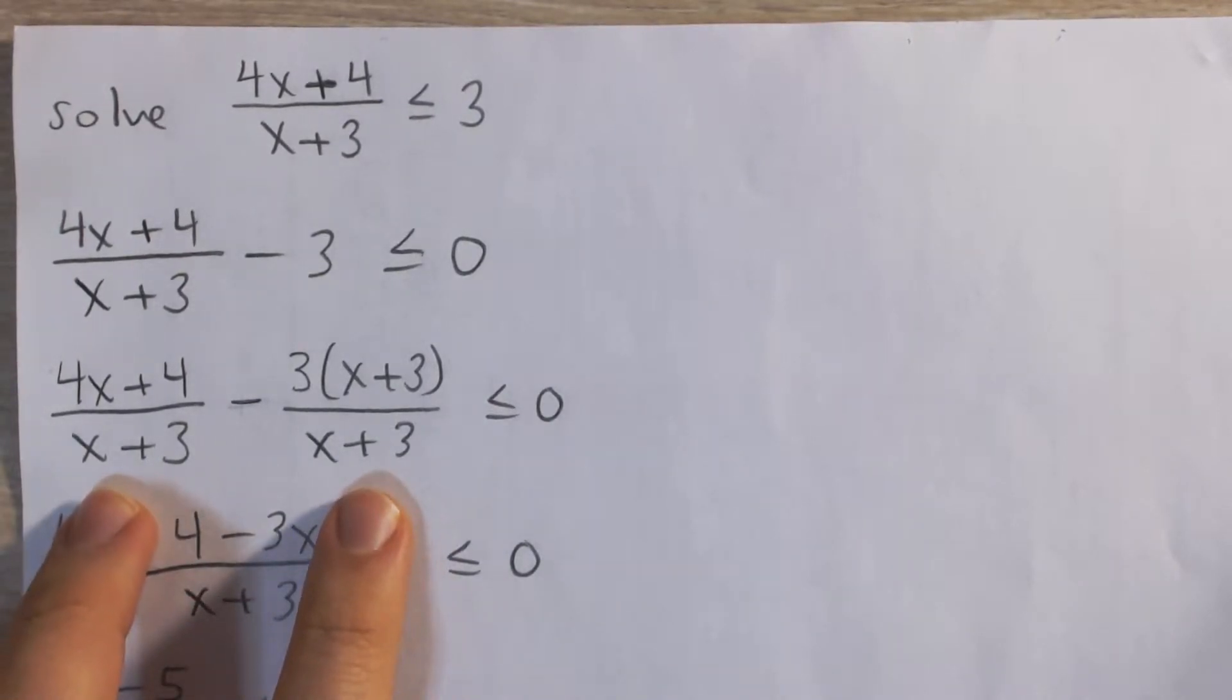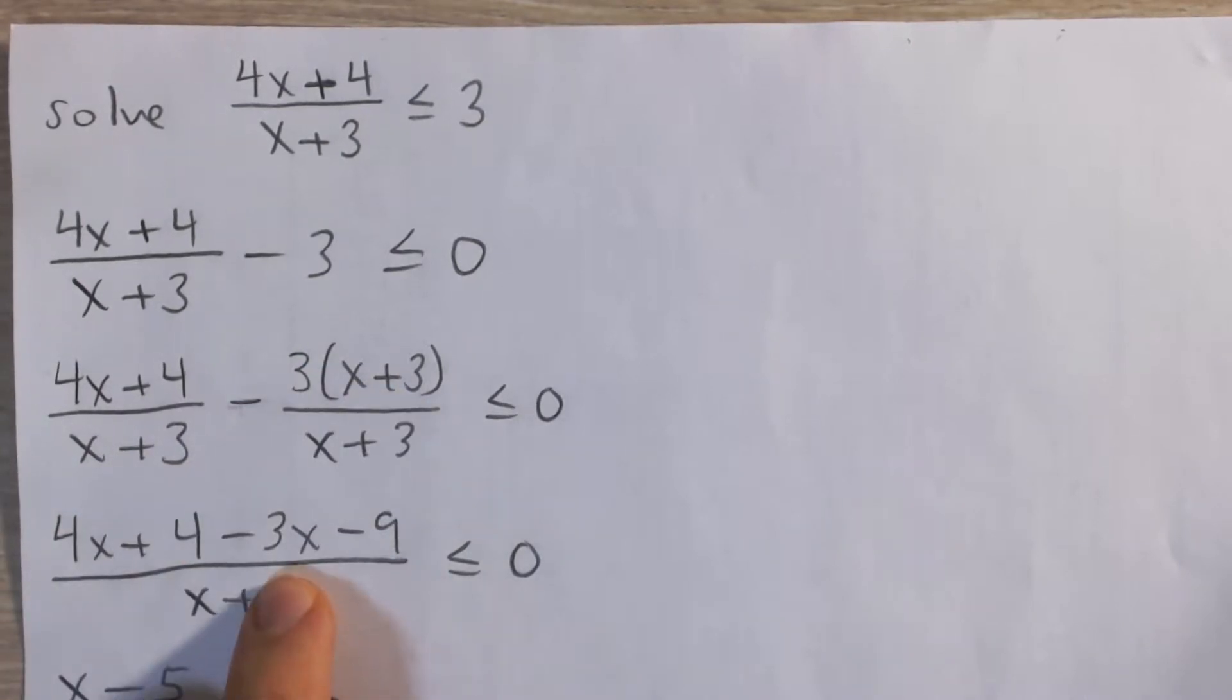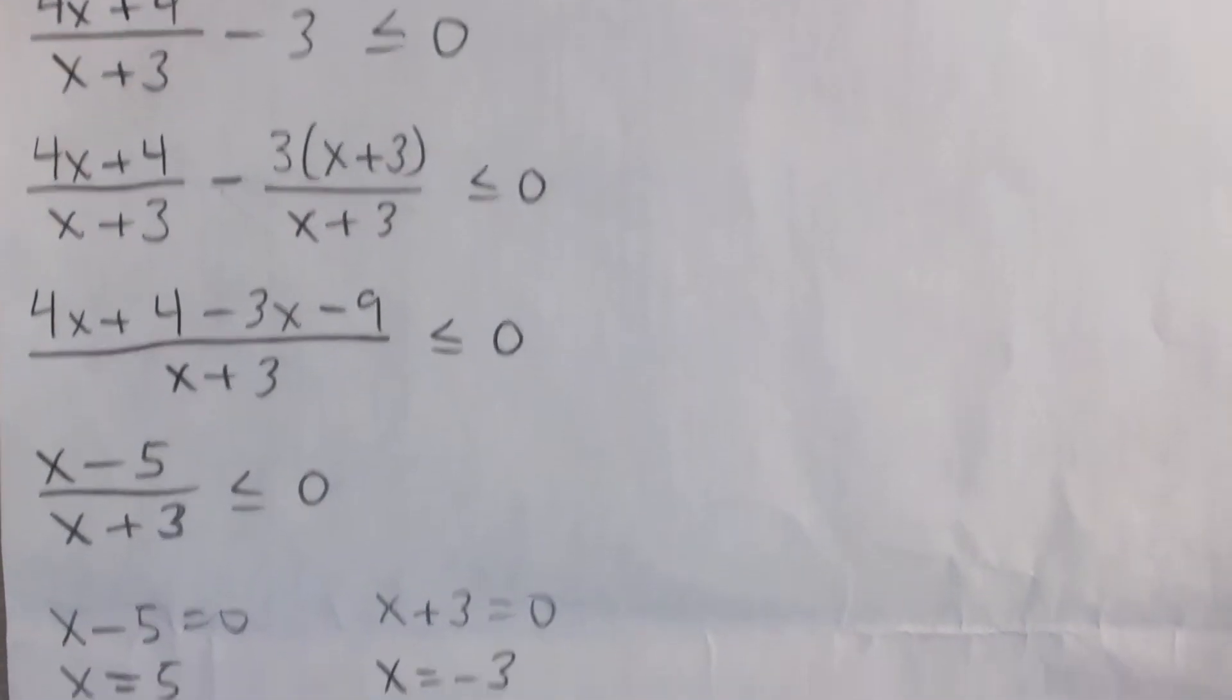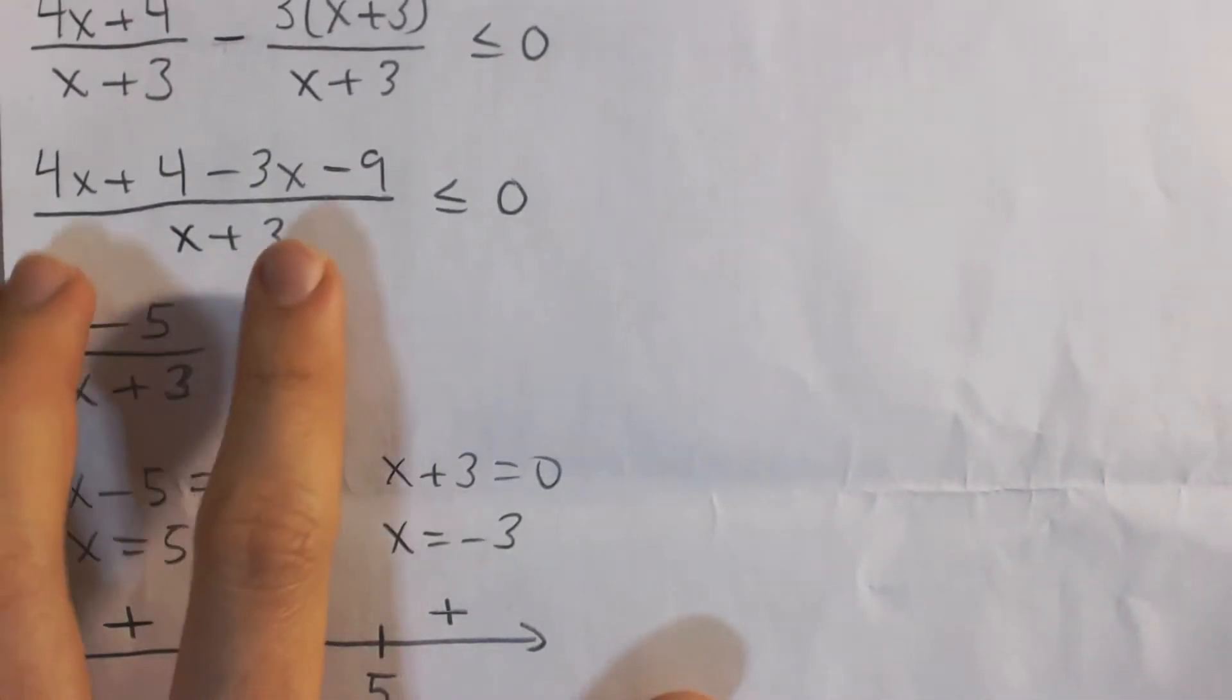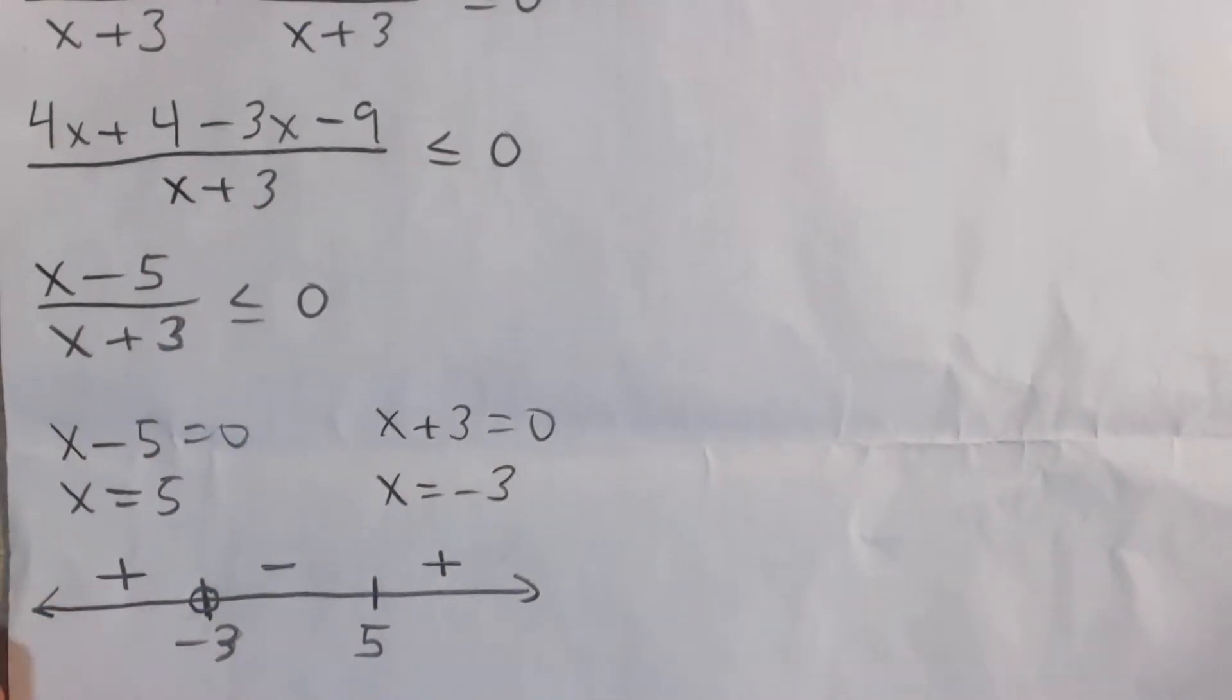And then now when they have the same denominator, we can combine their numerators. So I have negative 3 times x, that's negative 3x, and negative 3 times 3, that's negative 9. So if we combine like terms in the numerator, 4x minus 3x is x, 4 minus 9 is negative 5, we get x minus 5 over x plus 3 is less than or equal to 0.